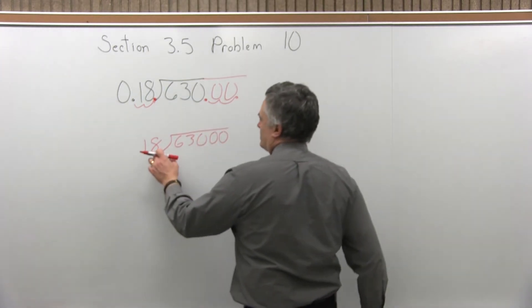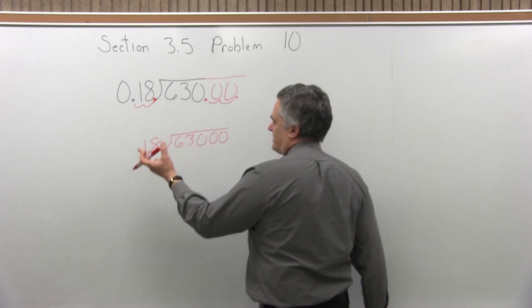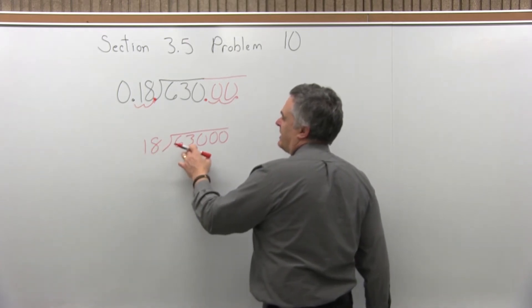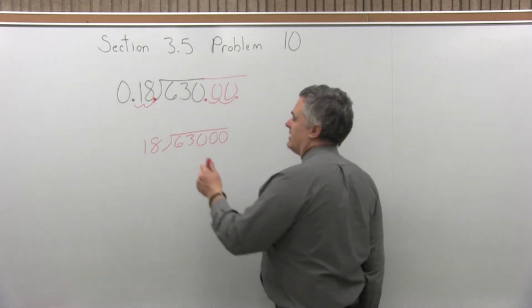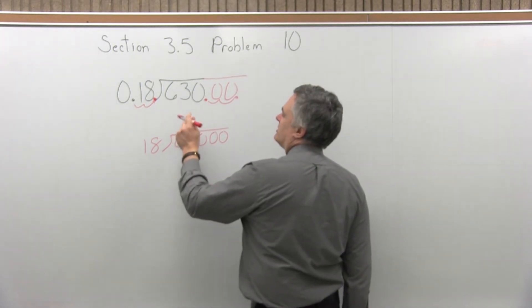So do the division. 18 divides into 6, it does not divide into 6. 6 is not big enough. 18 divides into 63. It will fit into 63, it should be 3 times.